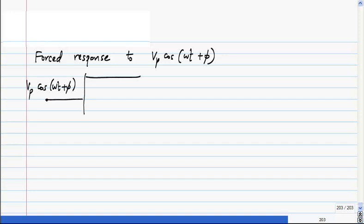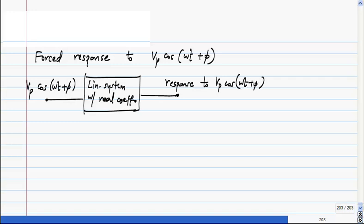If this is fed, although we took the example of an RC circuit, to a linear system with real coefficients, you will get some output. I will just call it a response to Vp cos(ωt + φ).